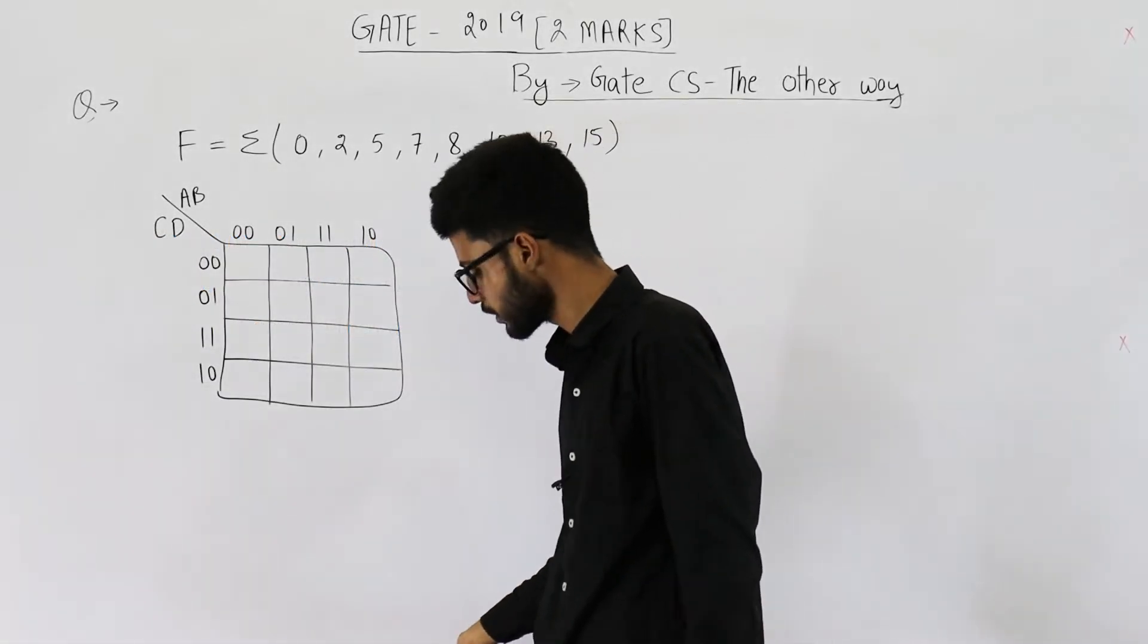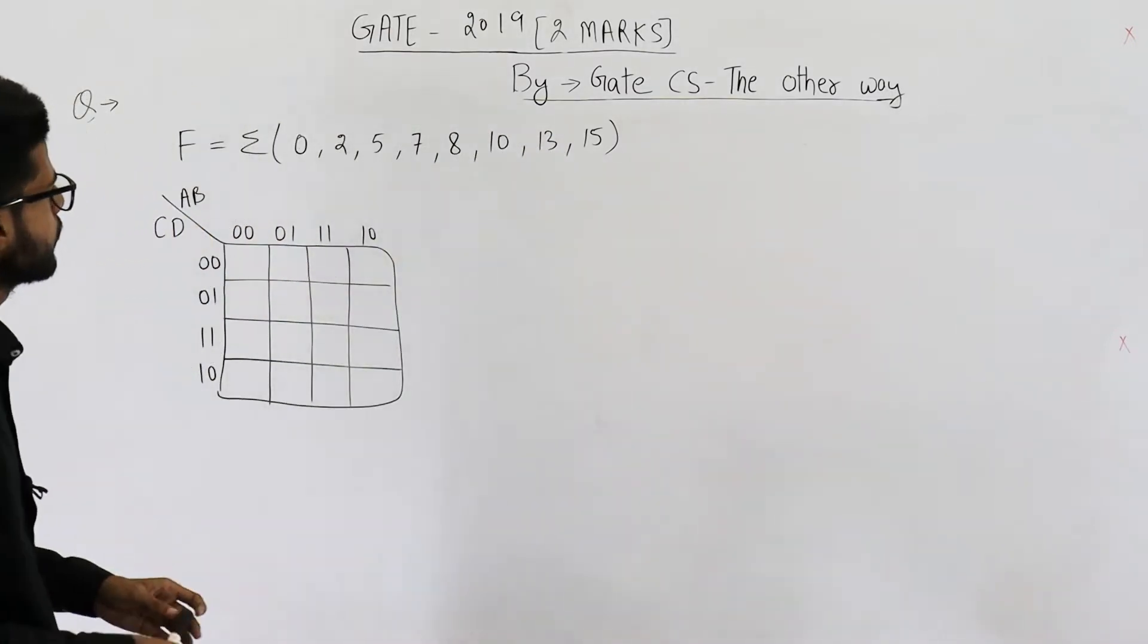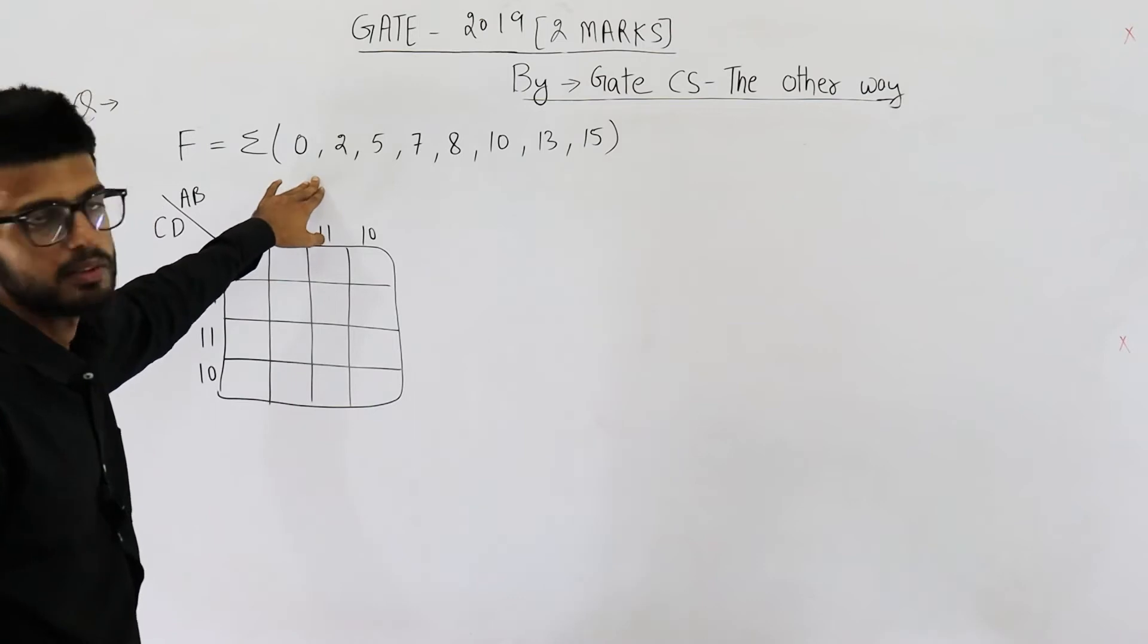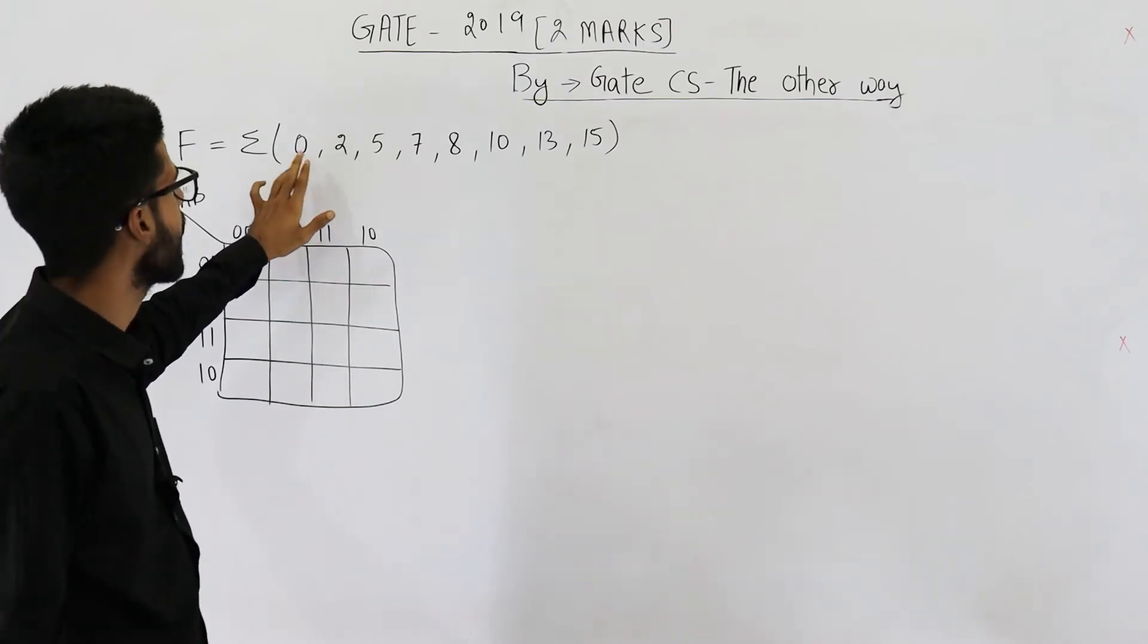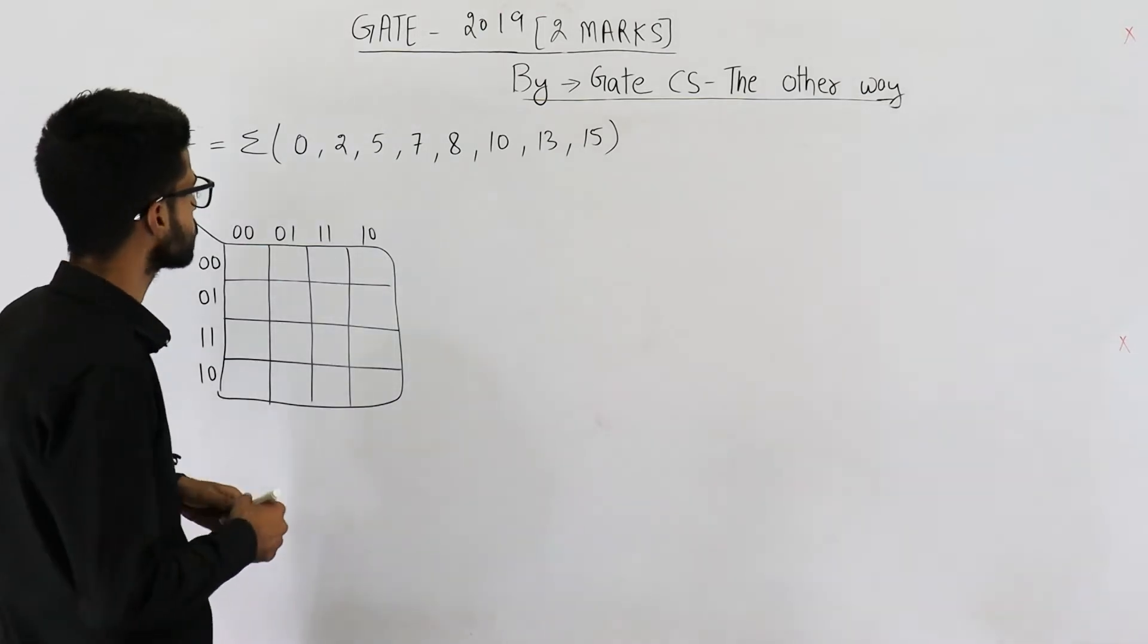So this is the function that they have given in the question. You can see all these are the minterms that means the function will have one at all these inputs. Let's fill that: 0,